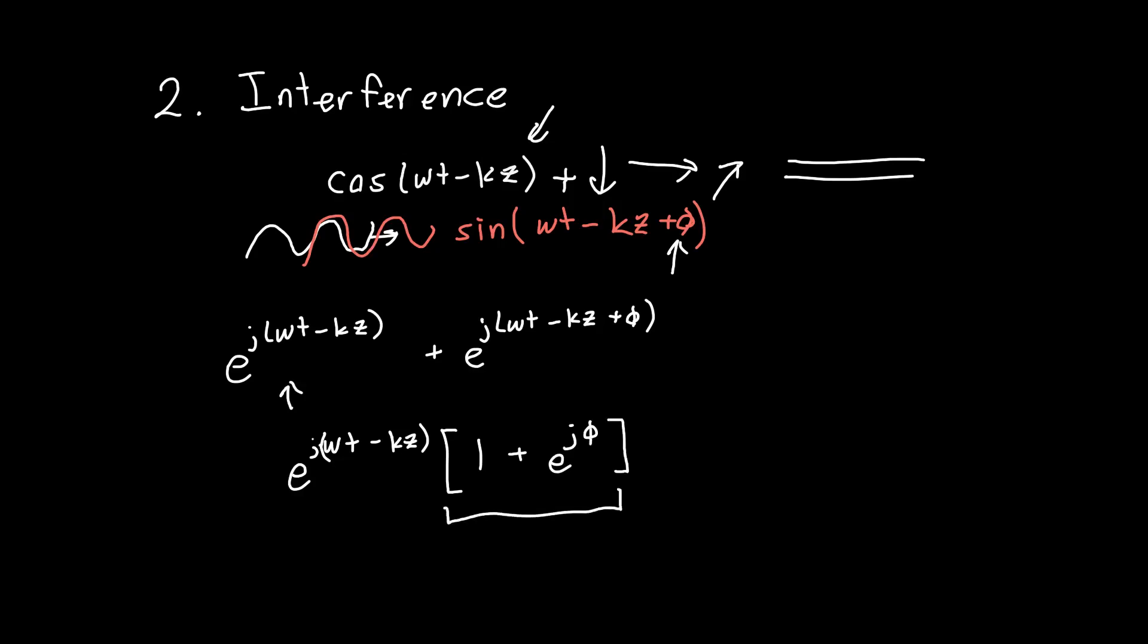And this is just a number. It's a complex number, but it's still just a number. And so let's call it b. And so our answer is just b times our original wave times our complex exponential. No trig identities. No nothing whatsoever needed. And depending on this phase here, b might be a complex number, it might be zero, it might be two, it could be a variety of things. But as long as you're comfortable with complex numbers, it's just a number.